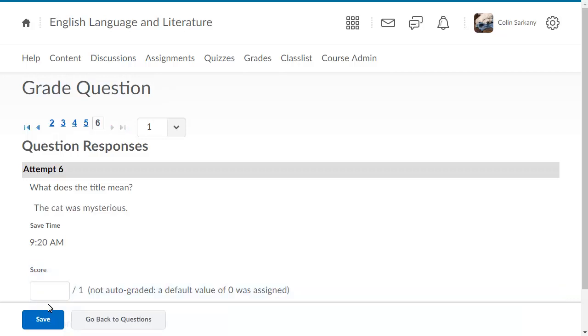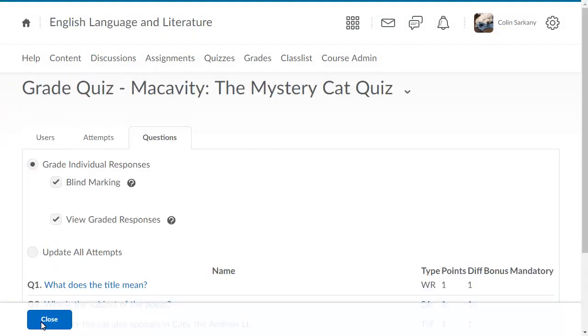When the last attempt is graded, click Save. You are returned to the Questions tab to continue the process. When you are satisfied with the grades for each question, click Close.